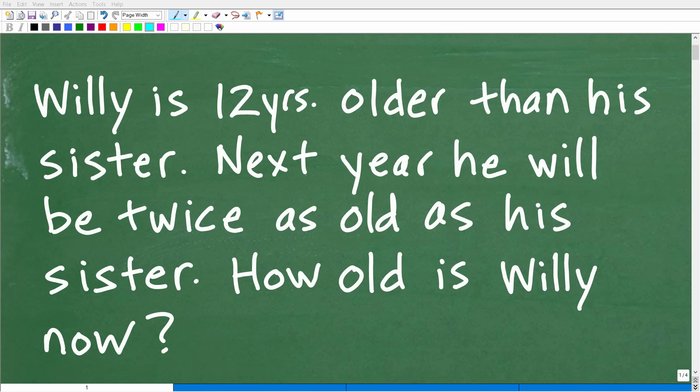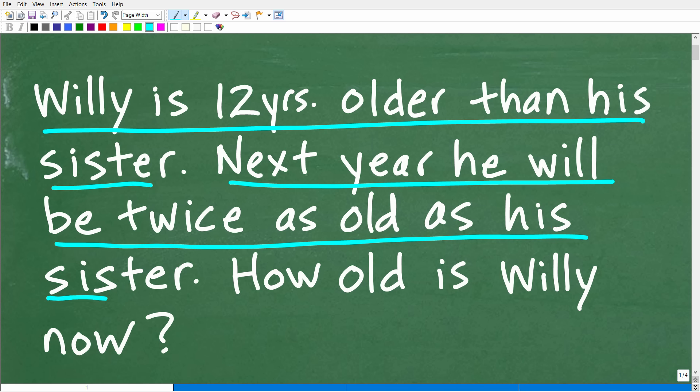Okay, so get ready to put your math skills to work to solve this interesting little math word problem. Matter of fact, let me go ahead and read the problem. Willie is 12 years older than his sister. Next year he will be twice as old as his sister. How old is Willie now?